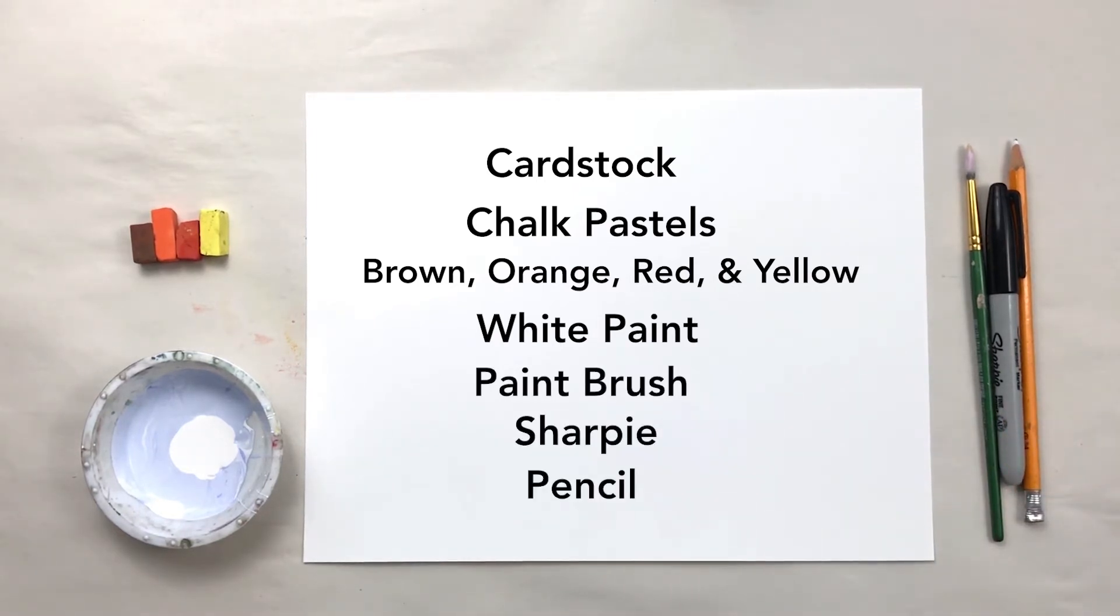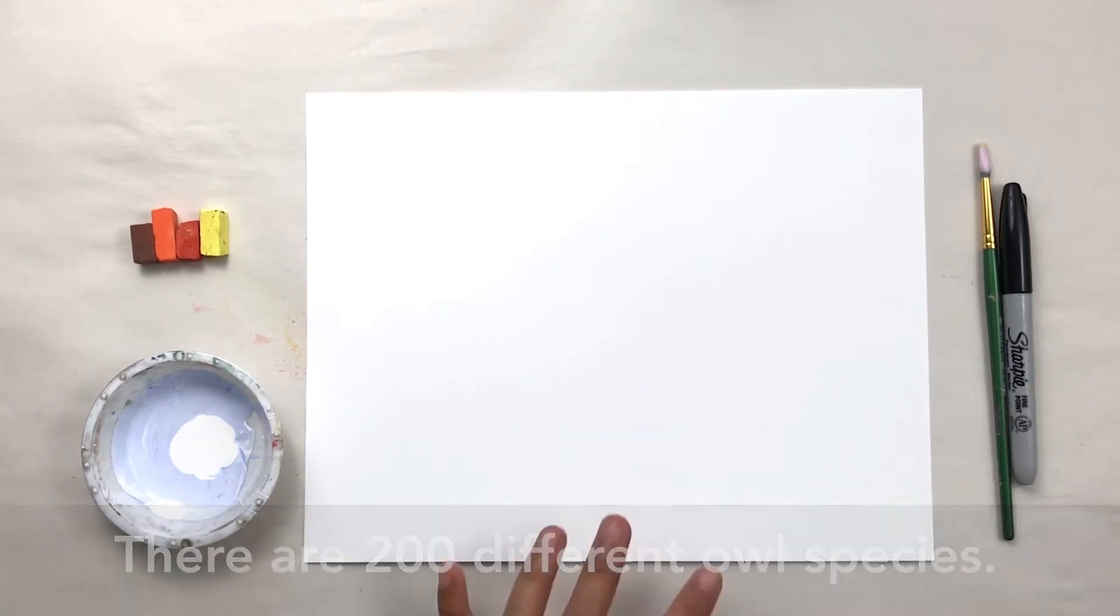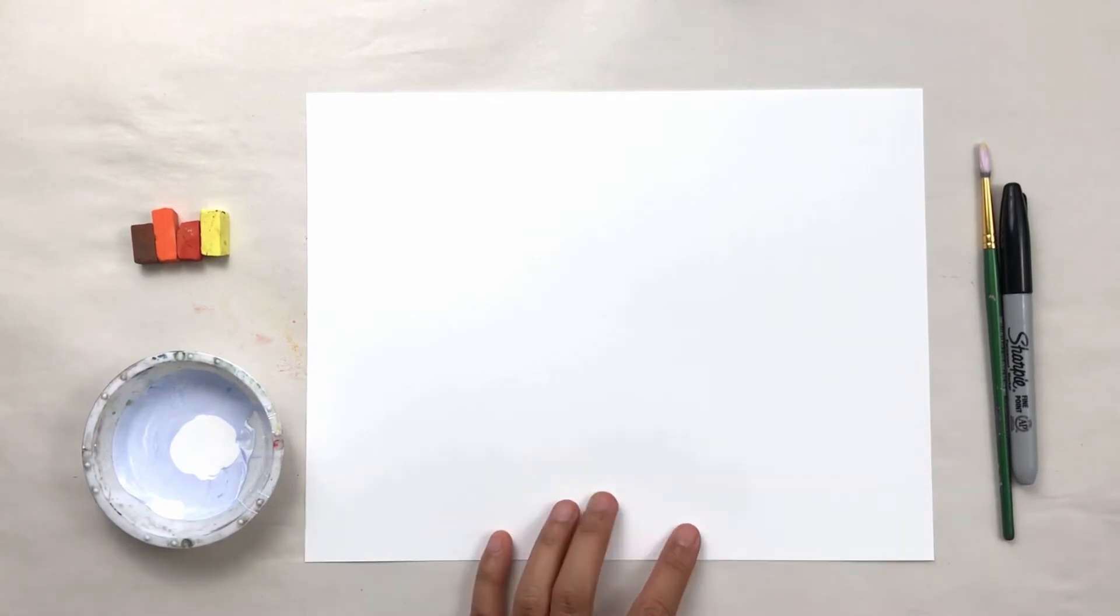So we're going to go ahead and actually get started. Now I do have my picture landscape, meaning it's elongated this way, but you can actually turn your paper however you want. If you are in a class, go ahead and write your name. But we are actually going to go ahead and get started.